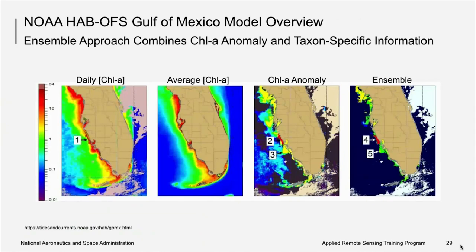In the user guide, they go into more depth on how they use chlorophyll concentration, chlorophyll A anomaly, and the Karenia brevis-specific optical properties in a combined or ensemble approach to pinpoint which regions are most likely to be blooms dominated by Karenia brevis, and if not Karenia brevis, whether it is a bloom of something else, and also to give an idea of where landfall is most likely to occur.